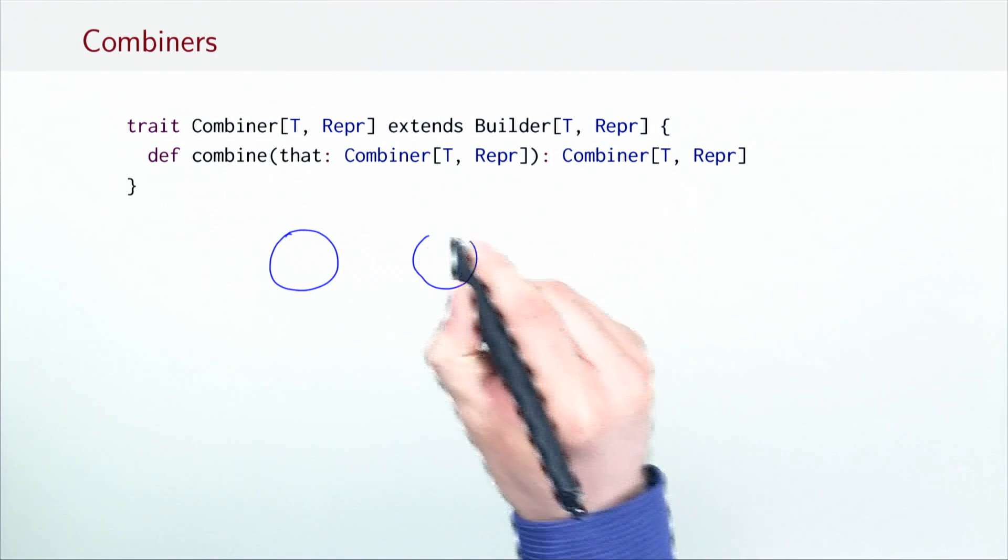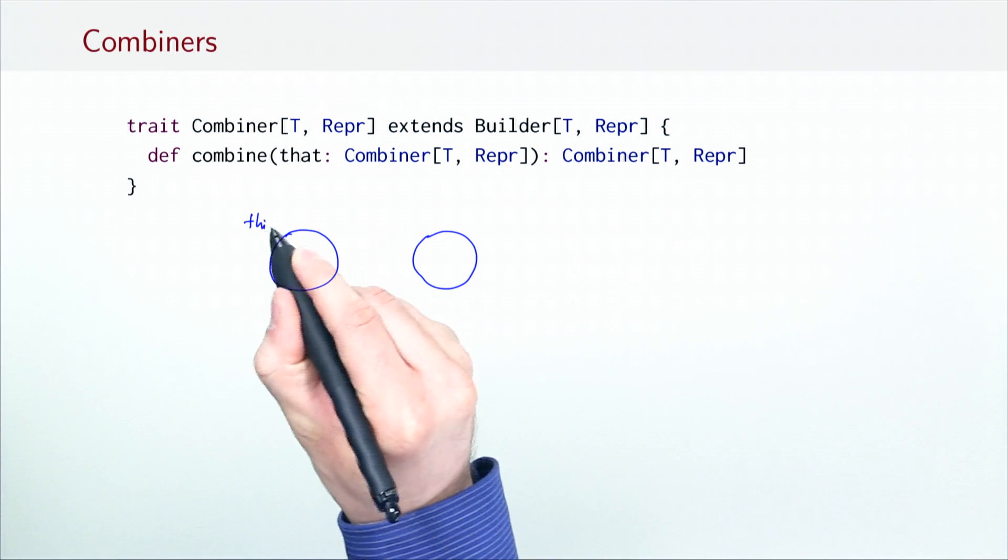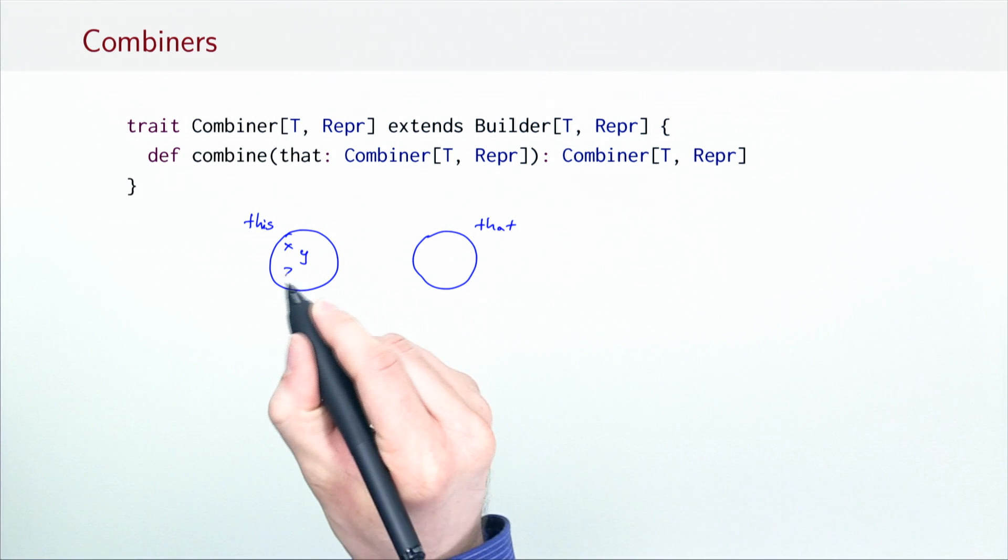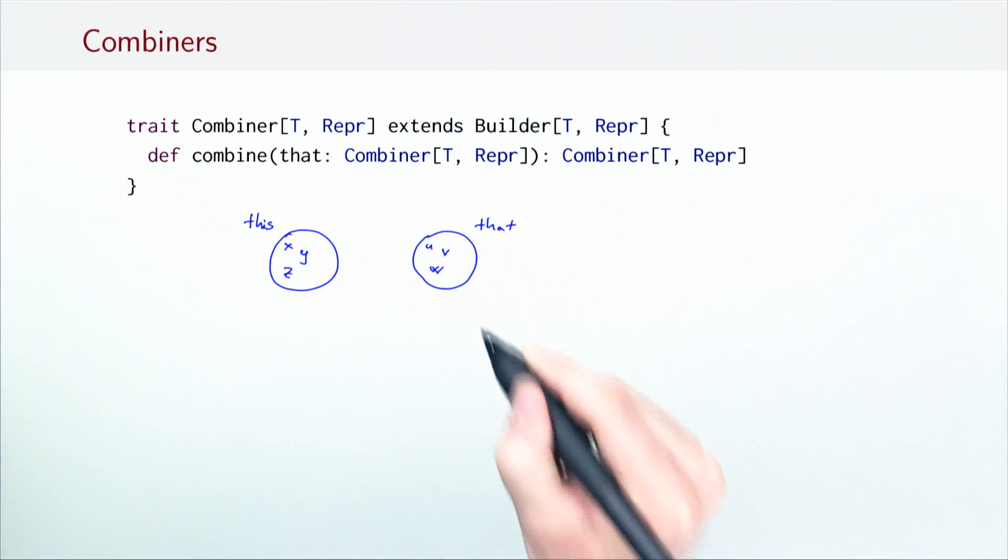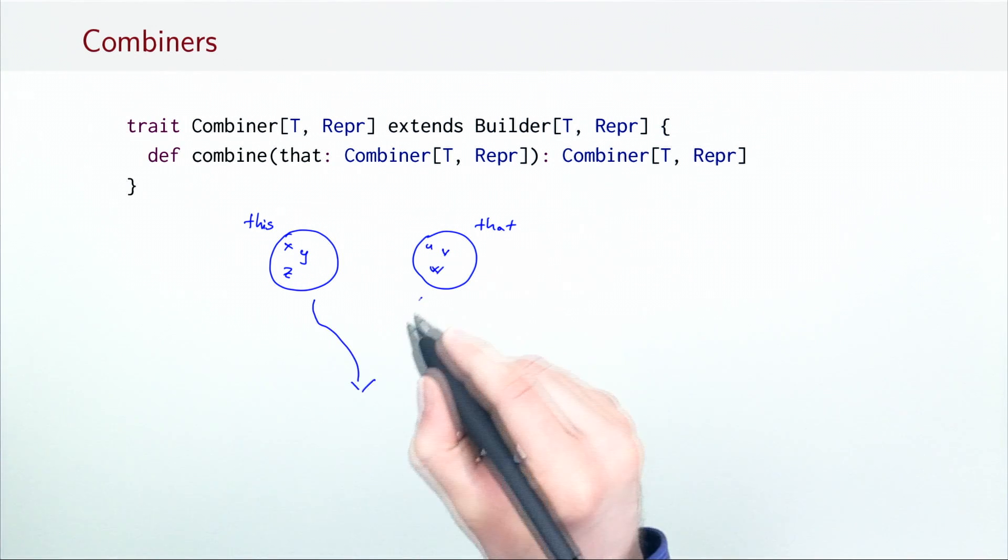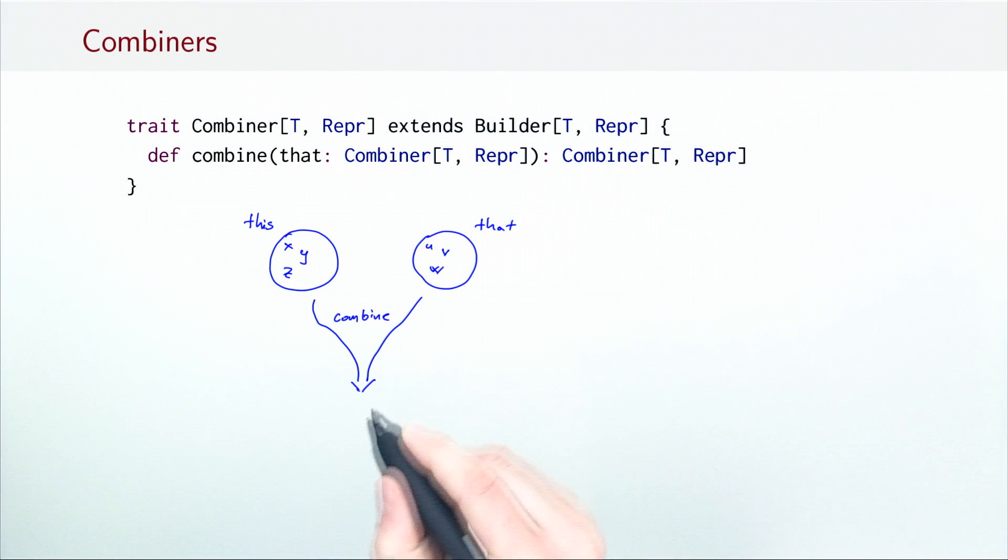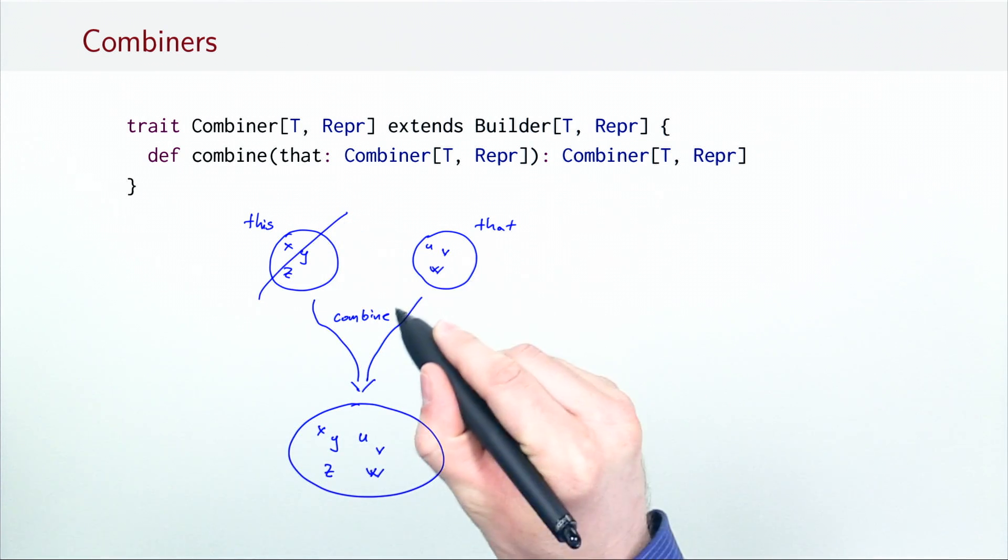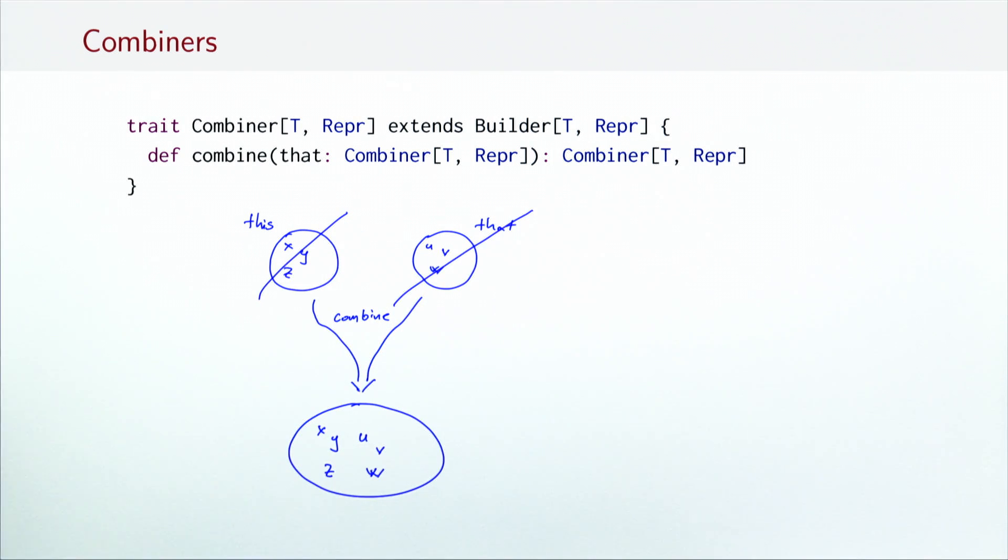Here is an example. Given a combiner this with elements x, y and z and another combiner that with elements u, v and w, the combine method produces a new combiner with elements from both and in the process invalidates the old combiners. After the combine method returns, the old combiners can no longer be used, but the new one can be used in the parallel program.